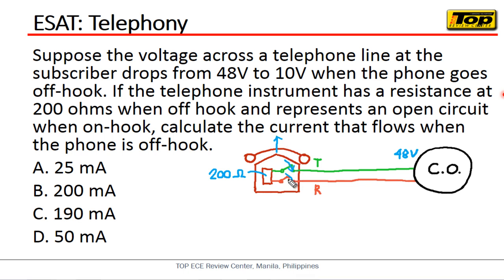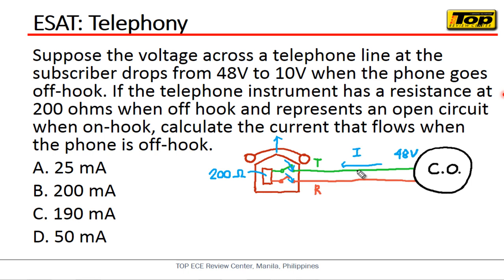What will happen if we go off-hook — meaning we pick up the telephone? When we pick up the telephone, our circuit will be closed, so current will pass through the circuit. The question is asking for the value of that current. This type of long worded question is common in the board exam, but the solution is actually very simple.